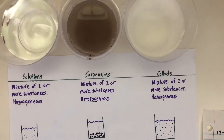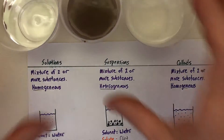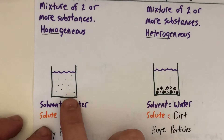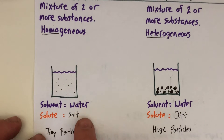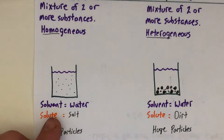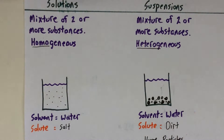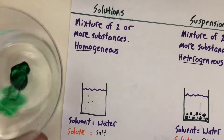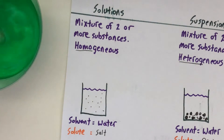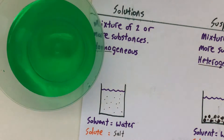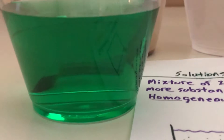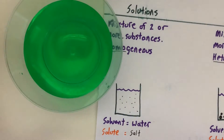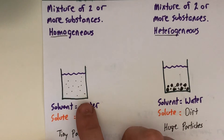In solutions, particle sizes are very tiny — so small that we can't even see them when dissolved, like in that salt water, and they're going to stay dissolved and not sink to the bottom. We have water as the solvent and salt as the solute. We can even add some food coloring and mix that up. Looking at it from the side, it looks the same throughout. Those particles are so small they won't ever fall to the bottom — it'll stay green forever.